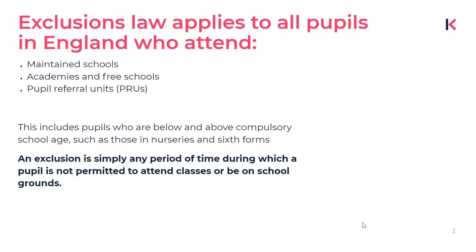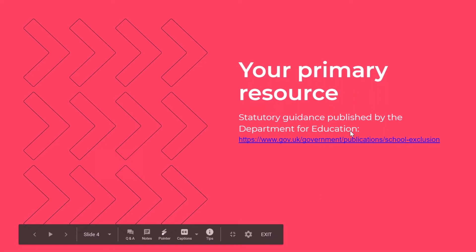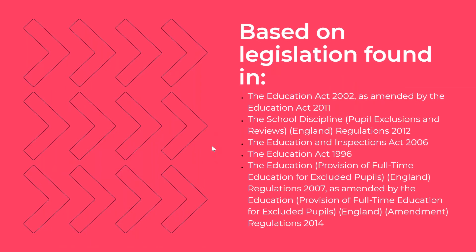An exclusion is simply any period of time during which a pupil is not permitted to attend classes or to be on school grounds. Exclusions are very heavily statutorily regulated. Your primary resource for finding information on exclusions is going to be the statutory guidance published by the Department for Education, which is based on specific legislation. Should you ever have any questions, you can usually find what you need there.